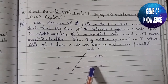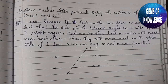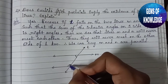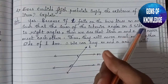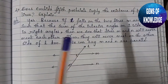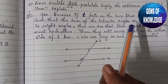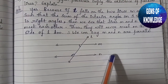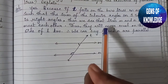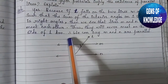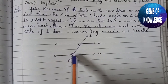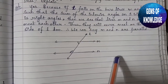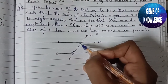...the sum of the interior angles — that is, this angle and this angle on one side of l — is equal to 90 degrees. Then we see that lines m and n will never meet each other. Thus they will never meet on the other side of l either, because if this angle is 90 degrees, the angle on the other side will also be 90 degrees.